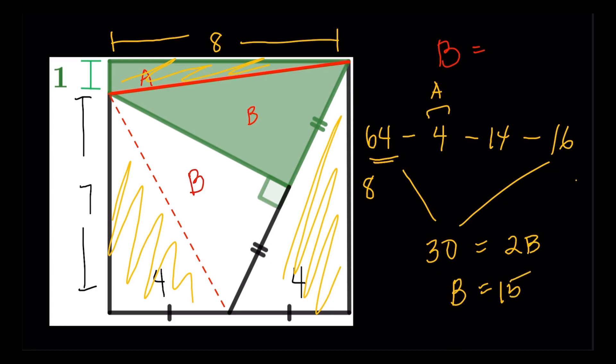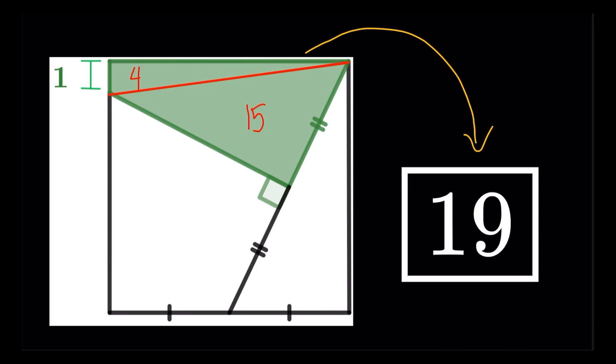We do have area. We have the two triangles. Region A has area four. Region B has area 15. So take the sum of the two. The green shaded region would have an area of 19. And this will be our final answer. Hopefully, you guys learned something new from this video. And I'll see you in the next one. Bye-bye.